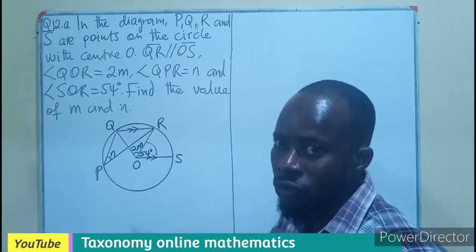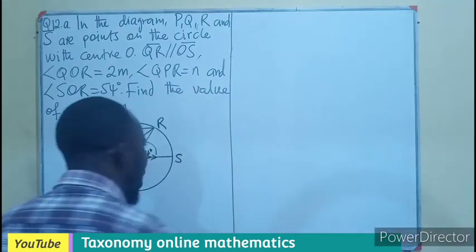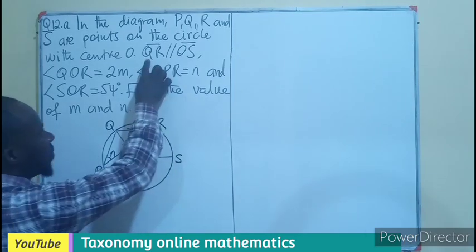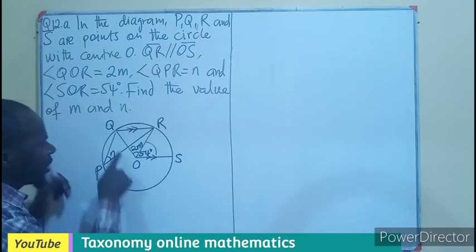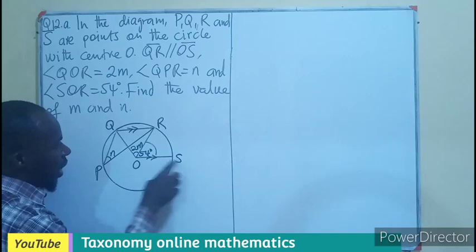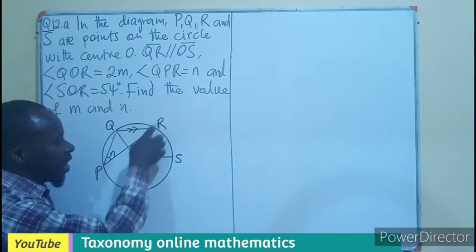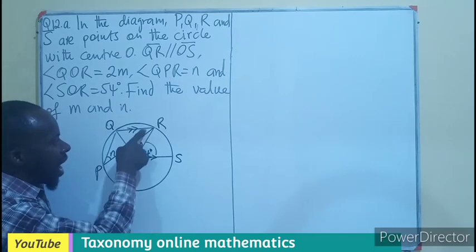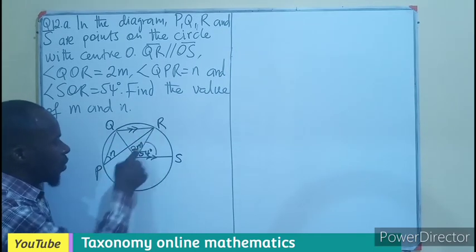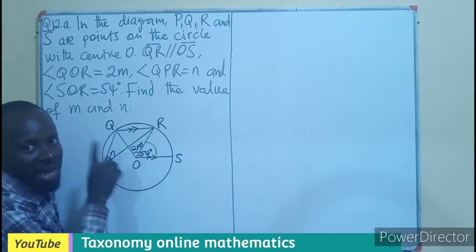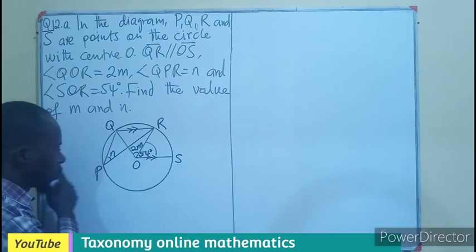Beginning with the parallel lines: if QR and OS are parallel, then the line RO is a transversal, which makes the angle QRO equal to 54 degrees using alternate angles.